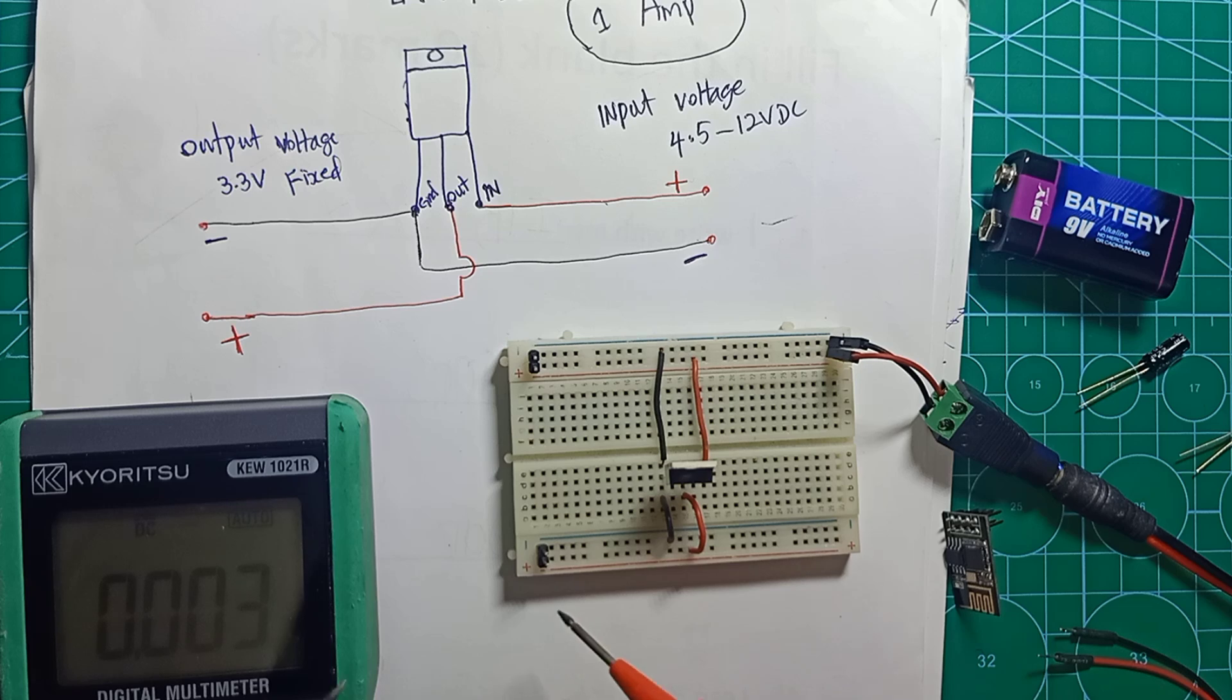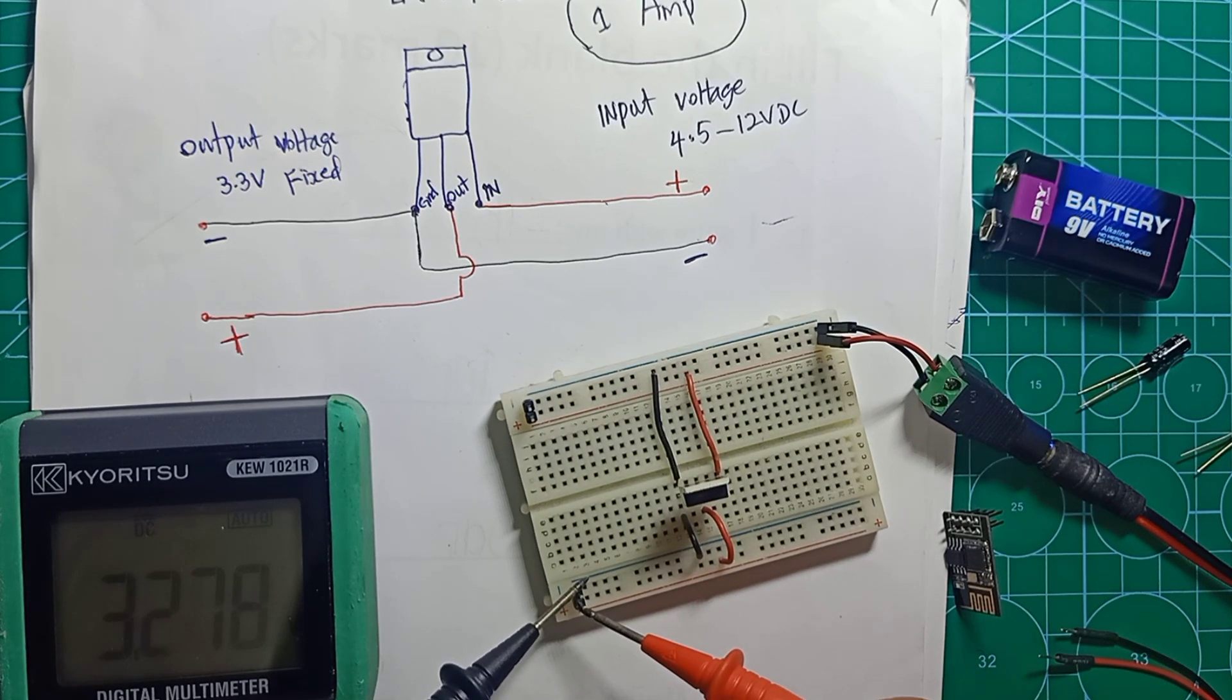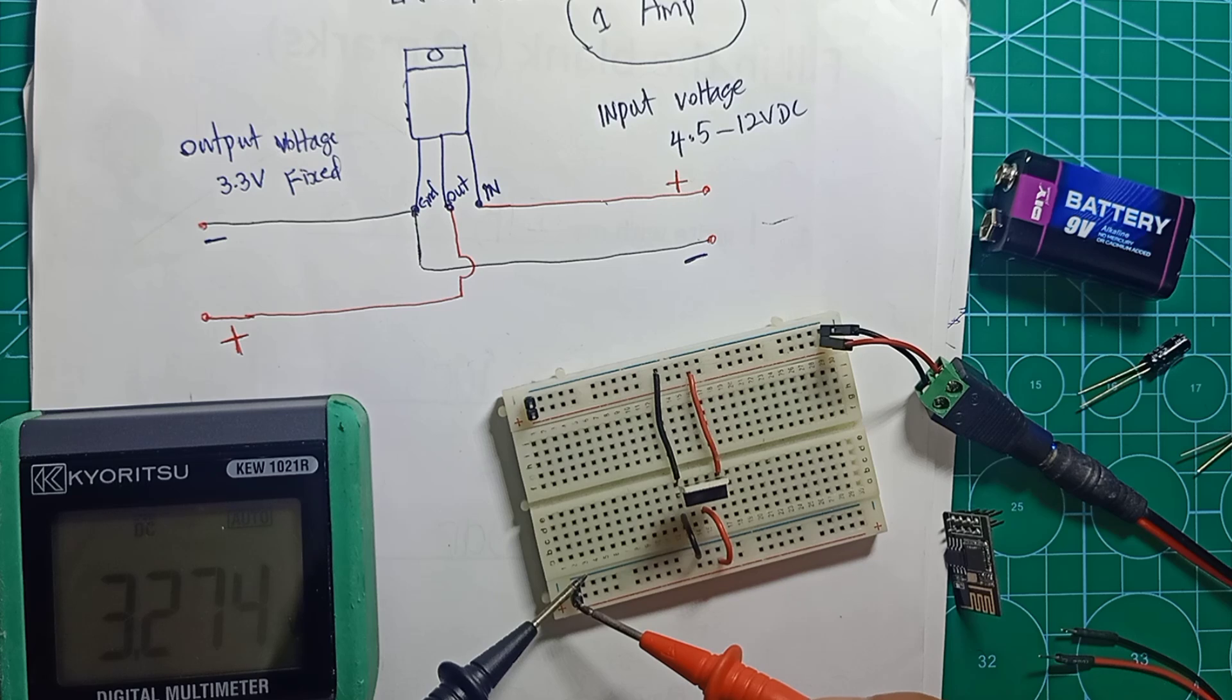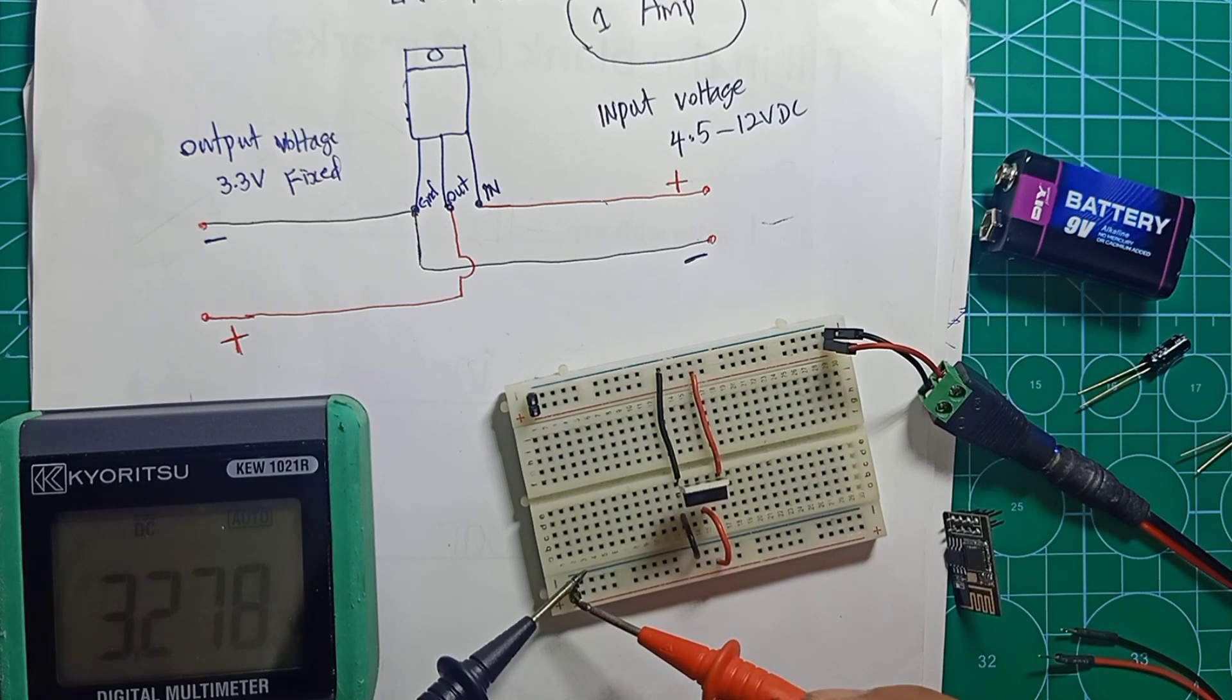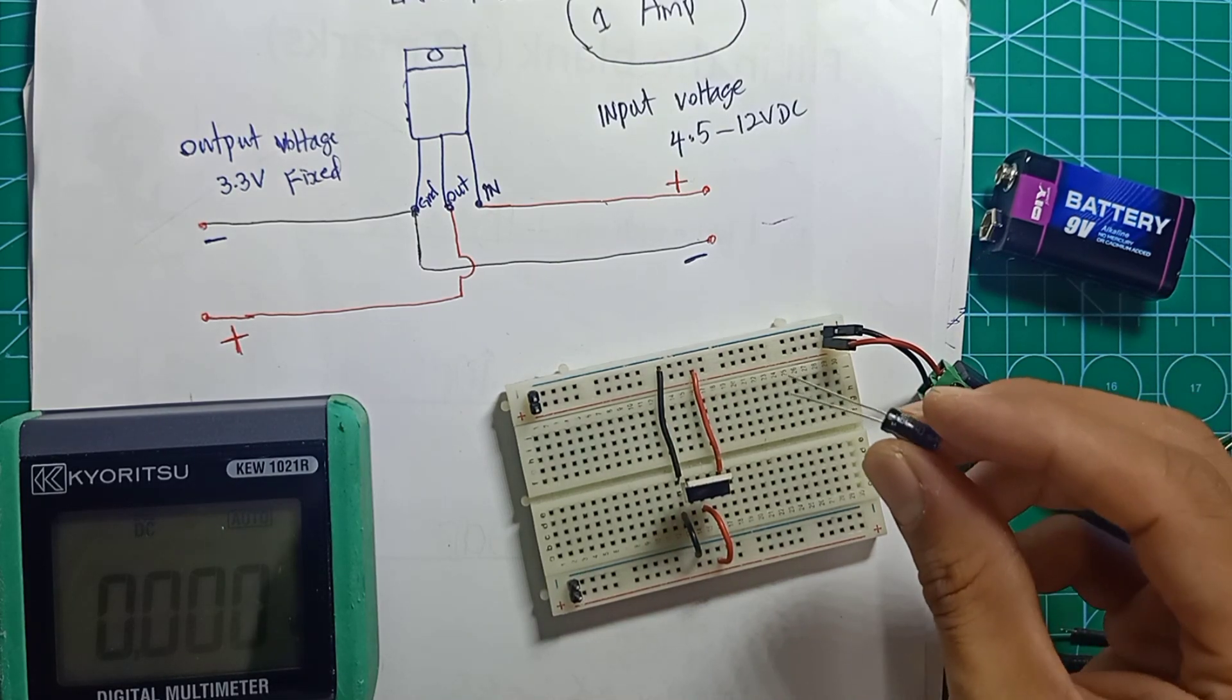Now let me check the output - this is negative and this is positive. I get 3.278 volts DC, which is considered 3.3 volts.